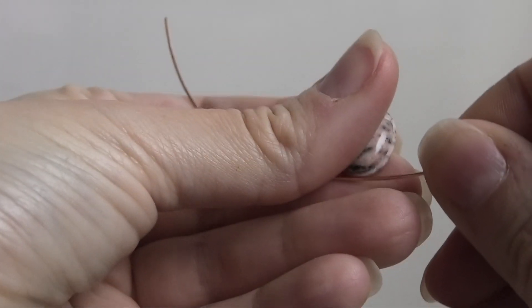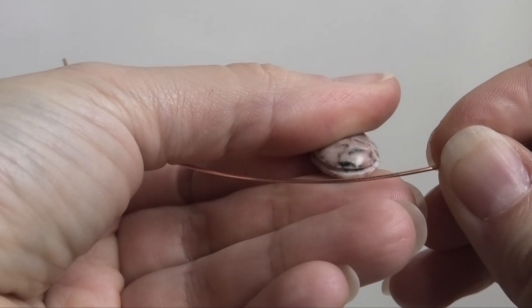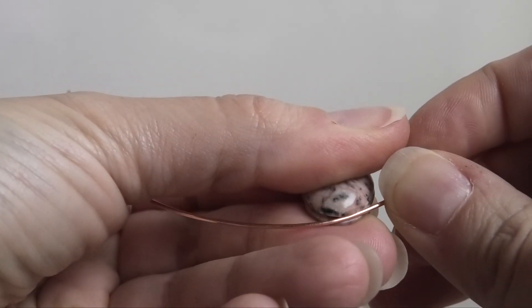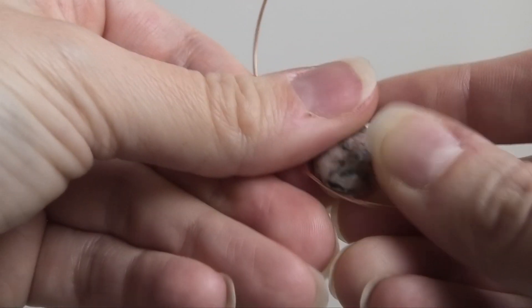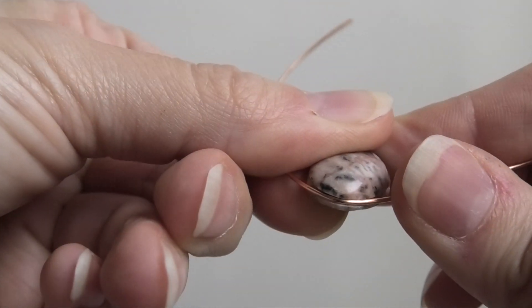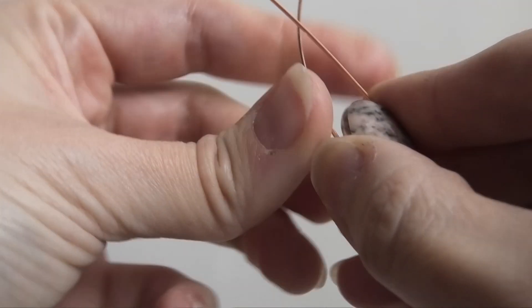So we're going to bend our wire, or just find kind of the middle of your wire. See the groove there? We're just going to put it into the groove and just kind of bend the wire around the stone, pushing it into the groove.